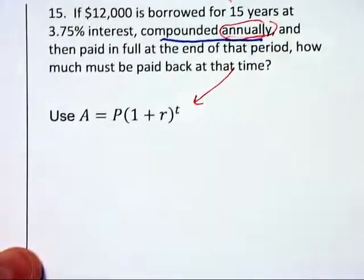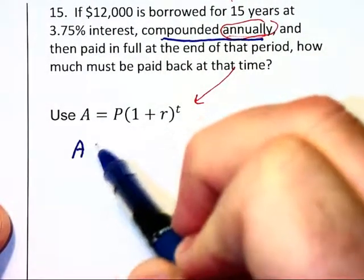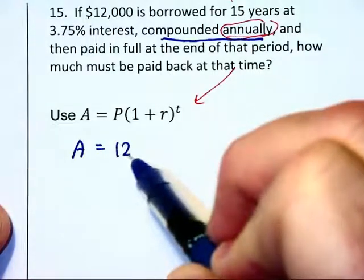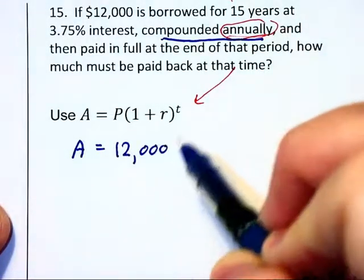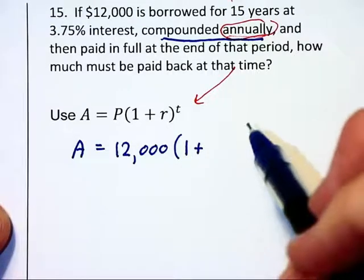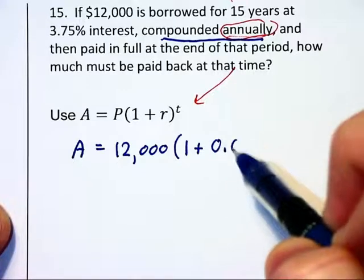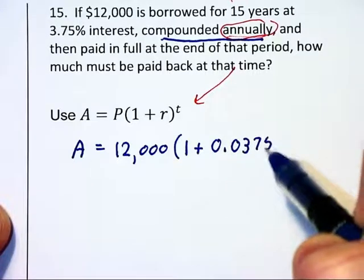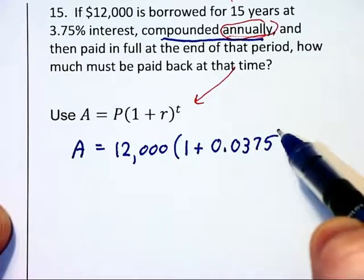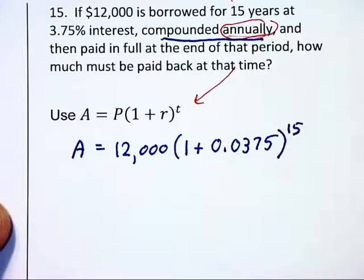So now let's go back and look at what we have here. The amount of money will equal 12,000 being invested times 1 plus an interest rate which is 3 and 3 quarters percent. That will be 0.0375. Make sure that you move the decimal over a couple places to the 15th power because this will take 15 years.